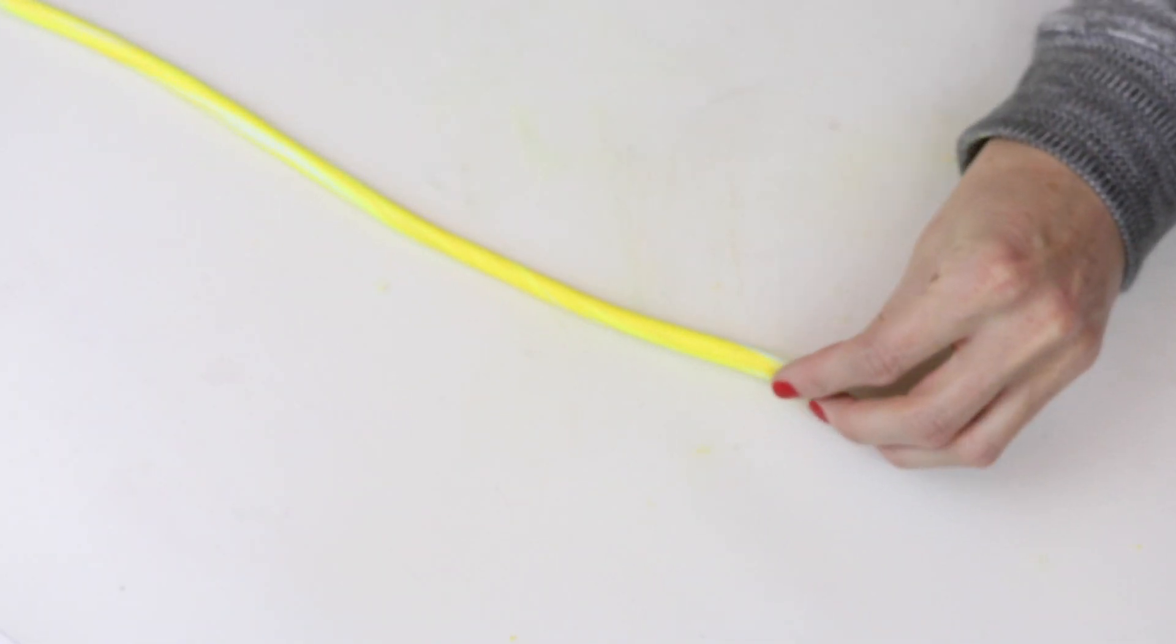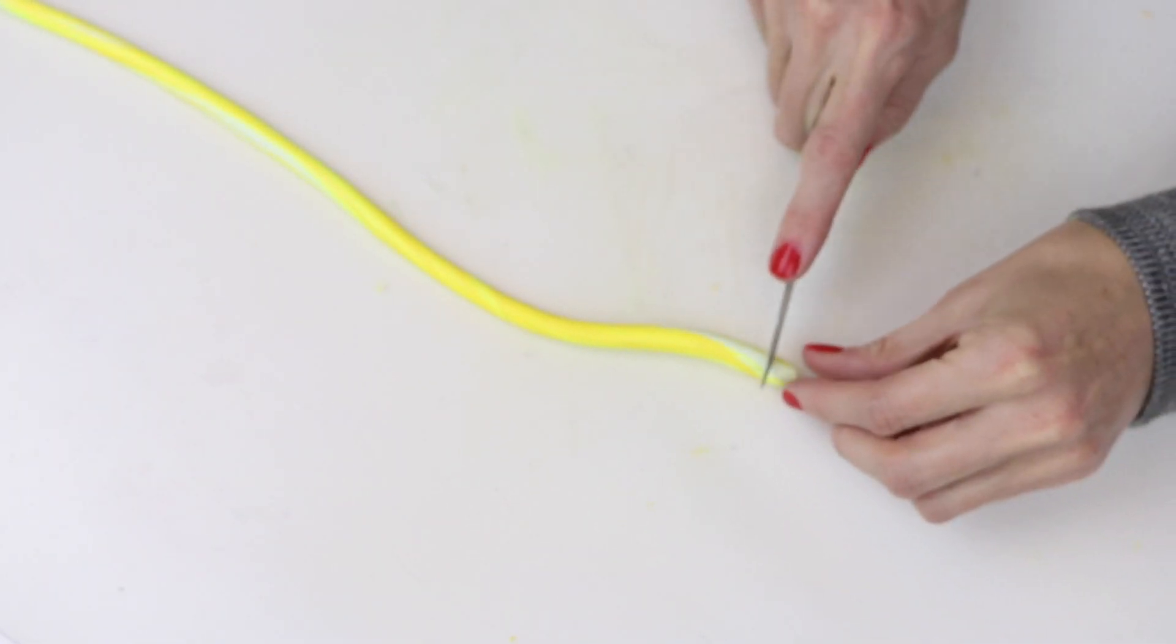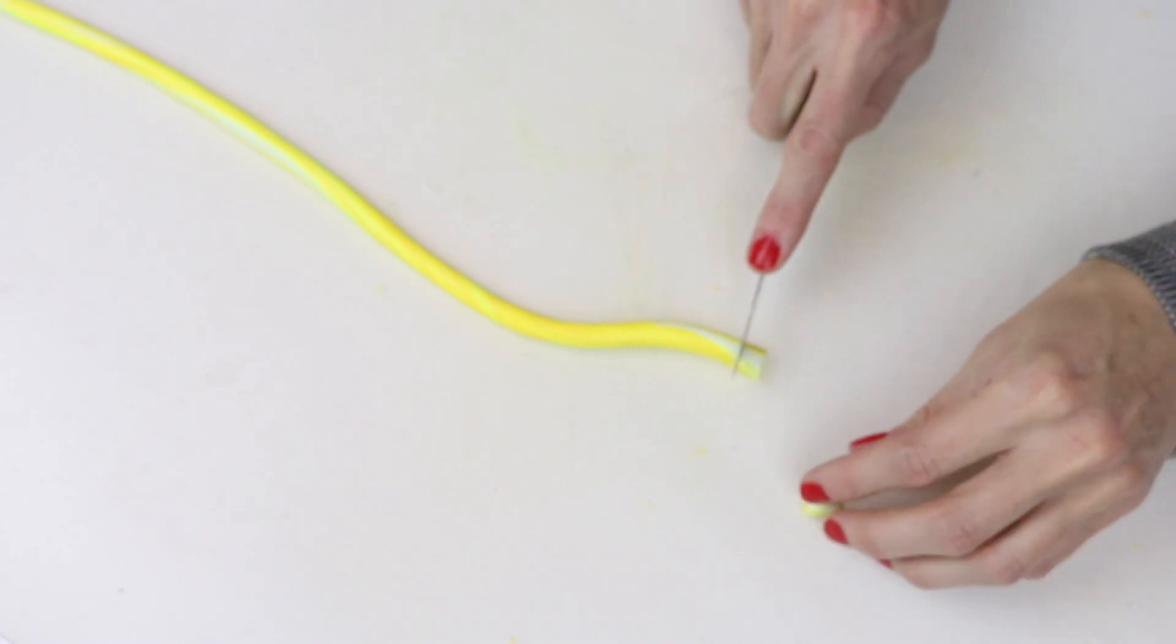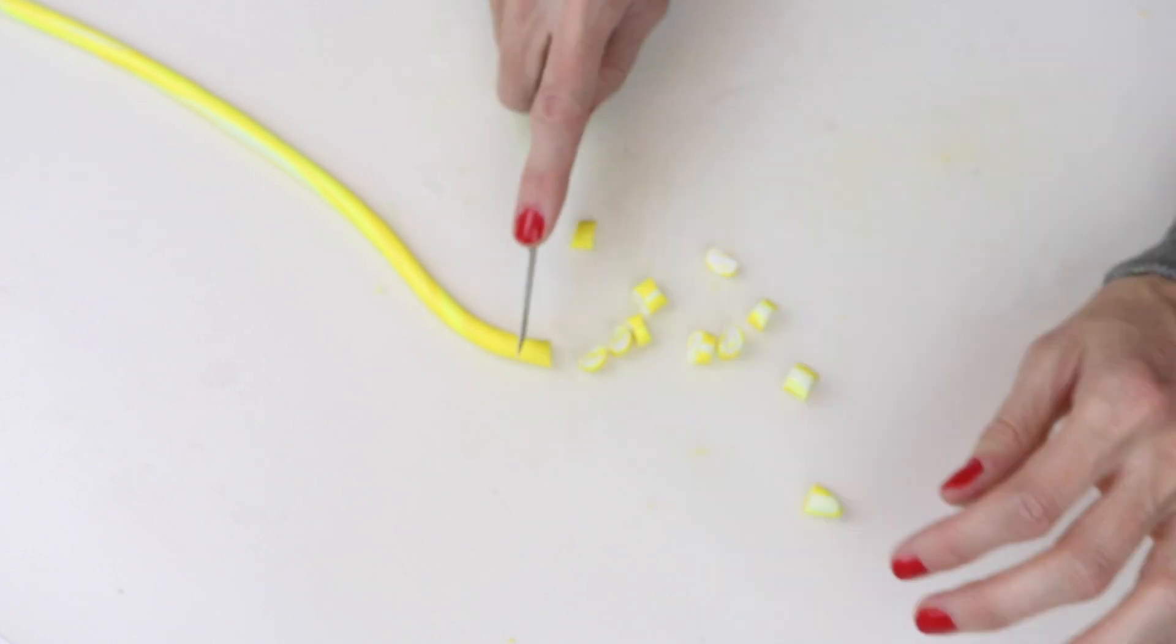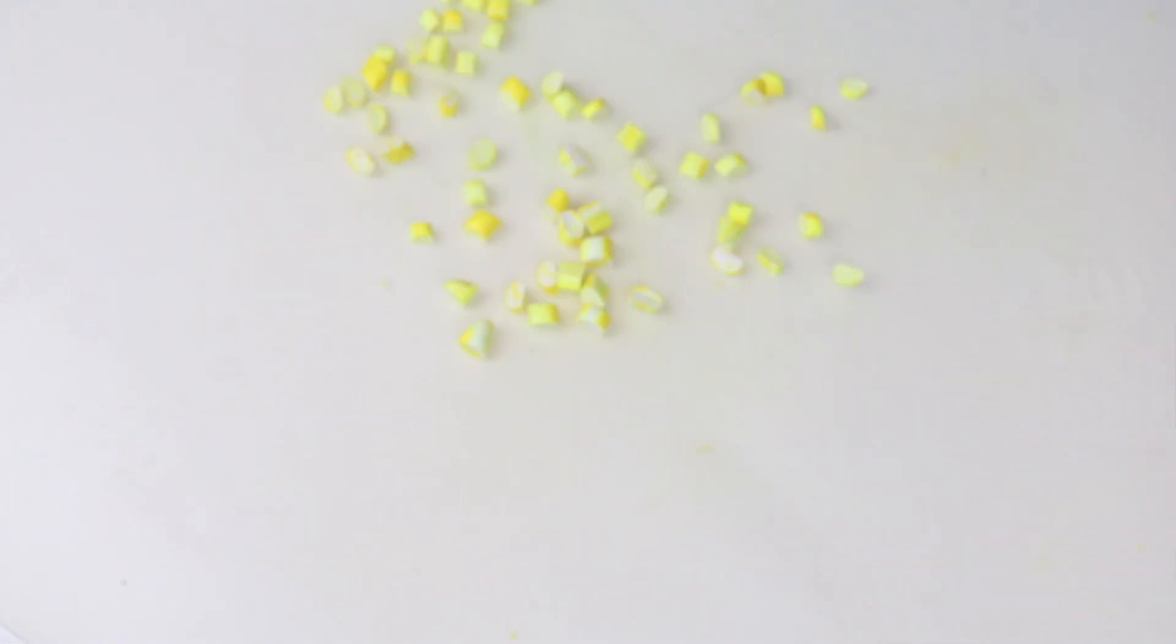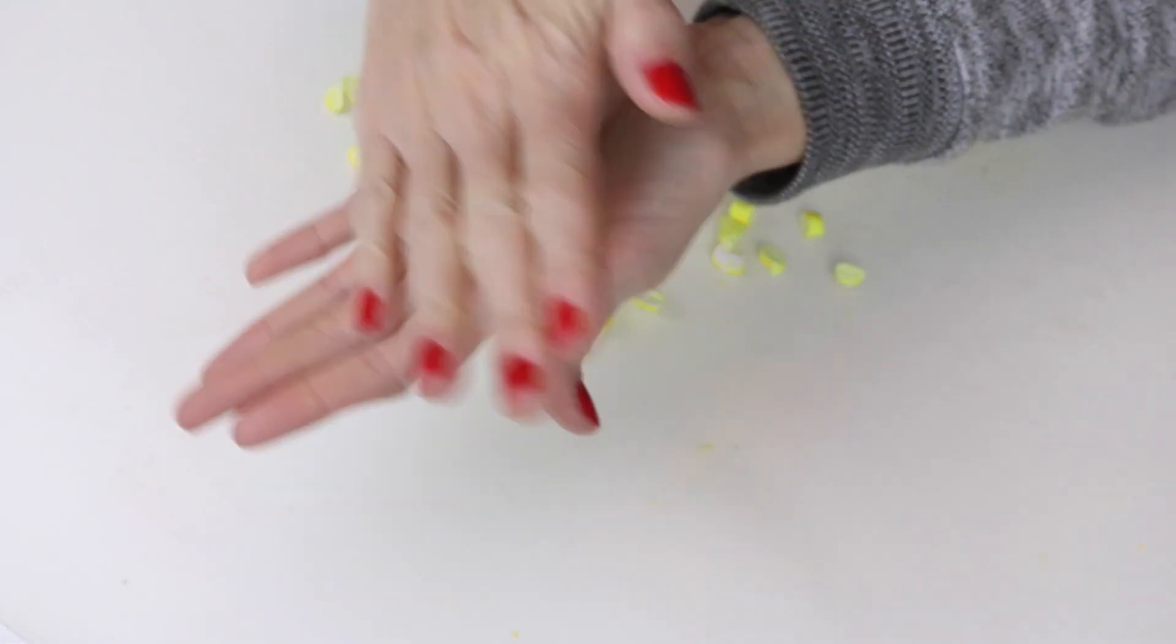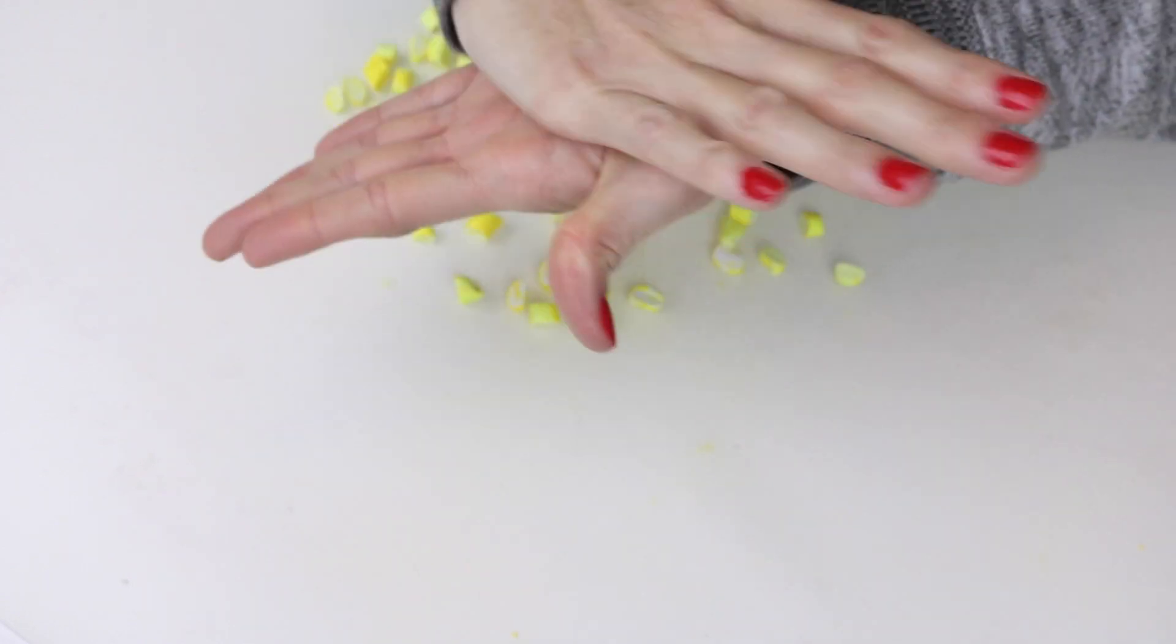When I was finished rolling out my clay, I then just started to cut off little pieces. You will want to vary the sizes. You don't want them all to be the same. Once I had them cut out, then I just started rolling those into little balls.